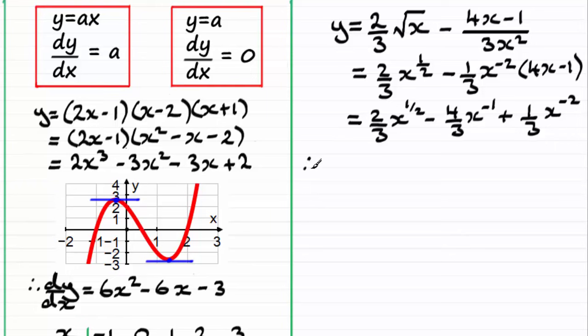So dy by dx would equal, and for this one we'll do half times two thirds, which will be one third. And then we reduce the power on x by one, so we get x to the power minus a half. Going to this second term here, minus four thirds times the minus one will be plus four thirds. And then reduce the power by one and we end up with x to the power minus 2. And for the last term here, minus two times a third is going to be minus two thirds. Reduce the power by one and you get x to the power minus 3.